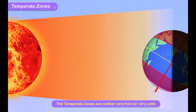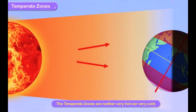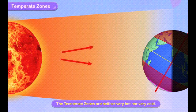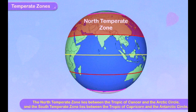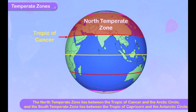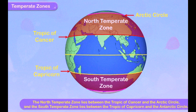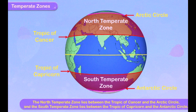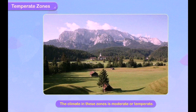The temperate zone receives slanted rays compared to the torrid zone, so it is neither very hot nor very cold throughout the year, and it experiences seasons. The north temperate zone lies between the tropic of cancer and the arctic circle, and the south temperate zone lies between the tropic of capricorn and the antarctic circle. The temperate zone has moderate or temperate climate and experiences maximum seasonal changes.